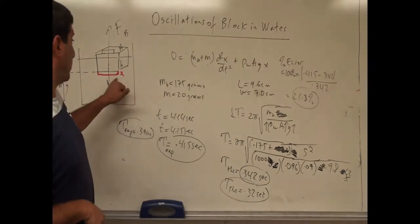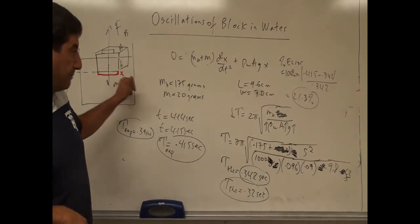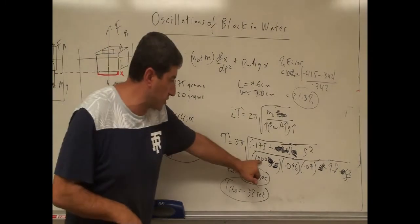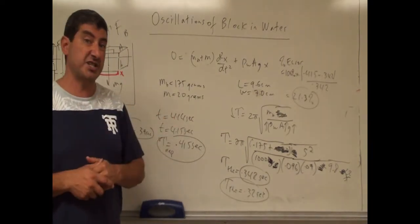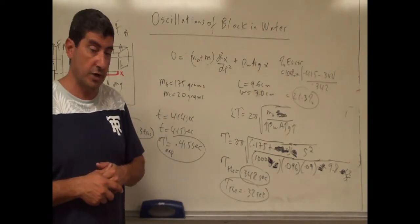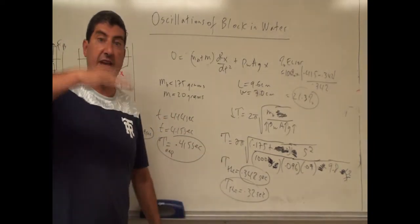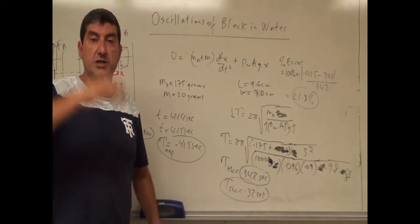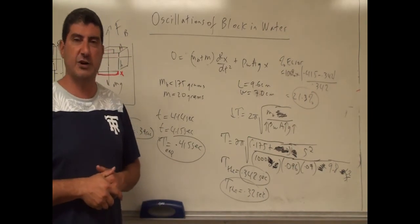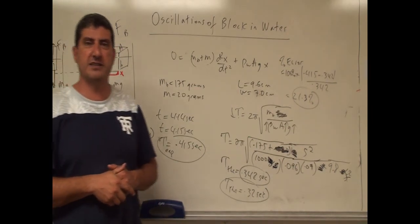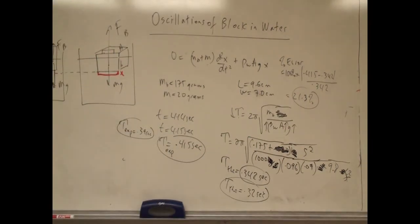So instead of water, if we had mercury, what would happen? The density of mercury is a lot bigger — about 13,600 kg/m³ — so the period would be much shorter in a denser fluid. You can see how to do problems like this. Thank you very much.